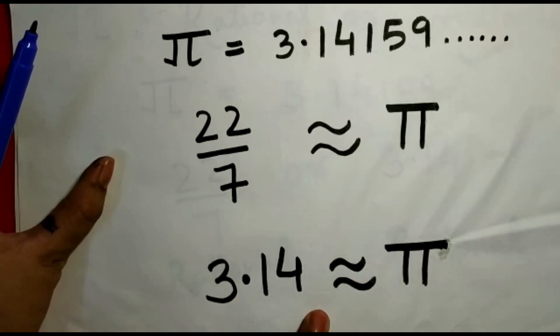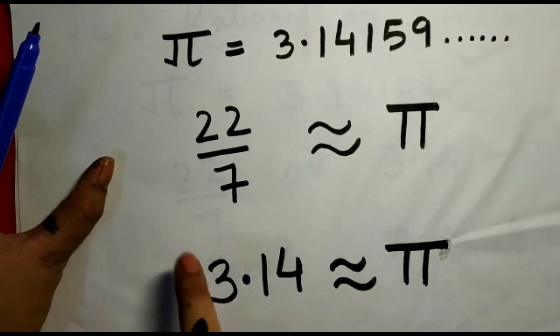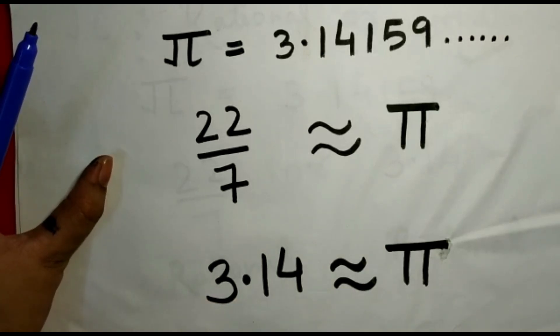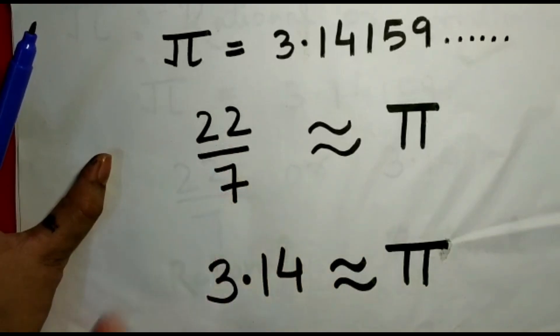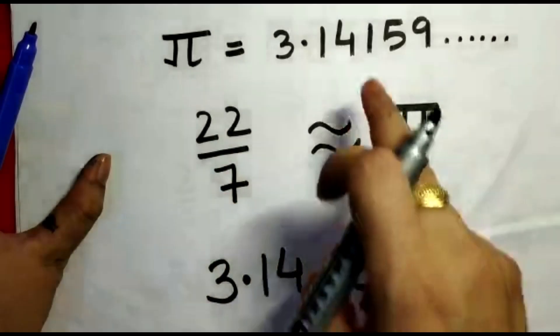One more thing I want to add: 22/7 is greater than Pi. You can divide 22 by 7, find the value, and check whether that is greater than this number or not.